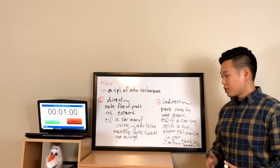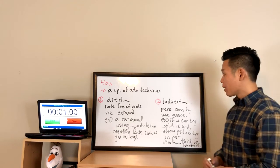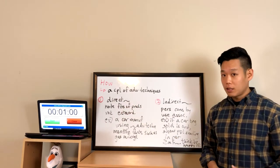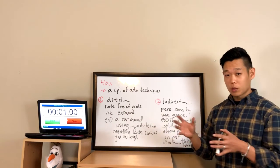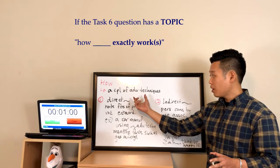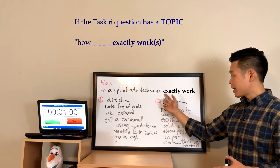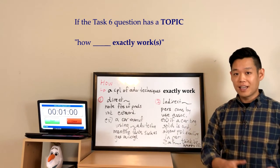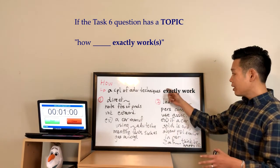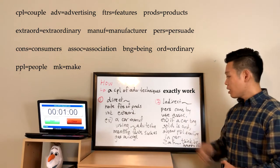The whiteboard ran out of space, but the beginning sentence has the subject 'a couple of advertising techniques.' Since Task 6 has a topic similar to a Task 4 question, you can always say how something exactly works or how some things exactly work. Since this is plural, the sentence ends with 'exactly work.' If the Task 6 lecture has a topic like a Task 4 lecture, just add 'exactly work' or 'exactly works' after the topic.